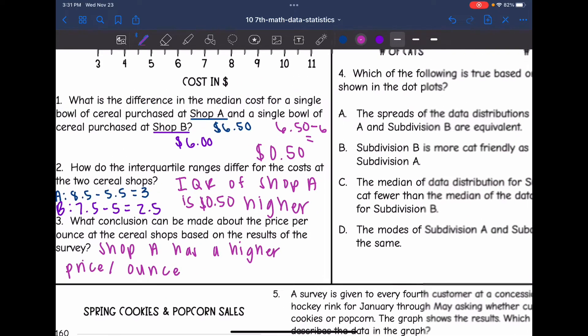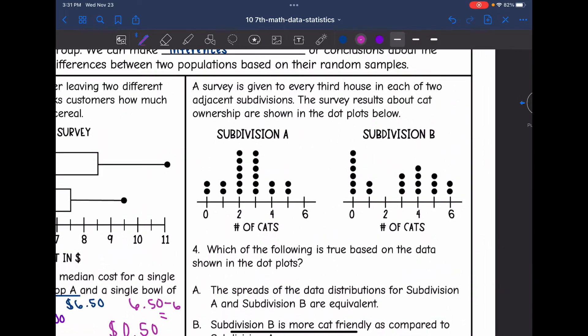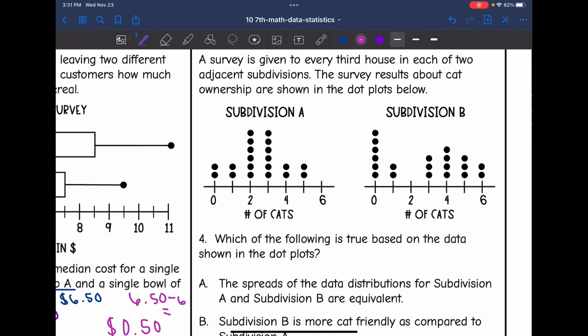Let's look at our next set of samples. It says a survey is given to every third house in each of two adjacent subdivisions. The survey results about cat ownership are shown in the dot plots below. So here's Subdivision A. It's pretty symmetrical. And here is Subdivision B. It looks like it is pretty skewed.